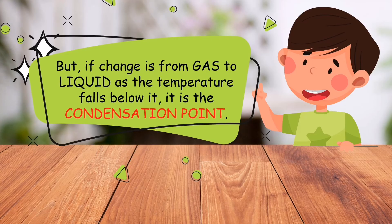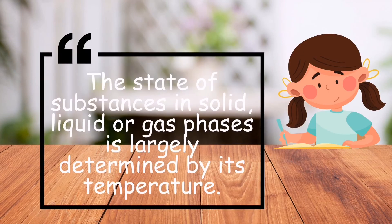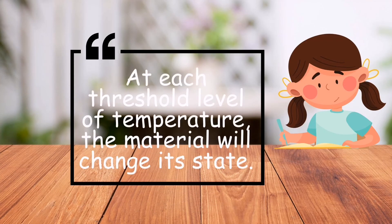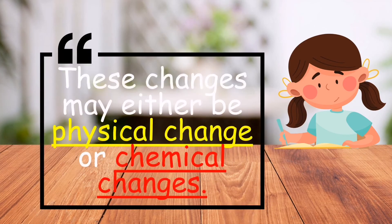If the change is from gas to liquid as the temperature falls below it, it is called the condensation point. The state of substances — whether solid, liquid, or gas — is largely determined by its temperature. At each threshold level of temperature, the material will change its state. These changes may either be a physical change or a chemical change.